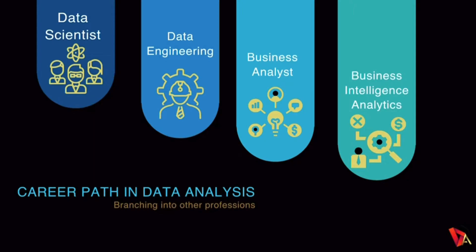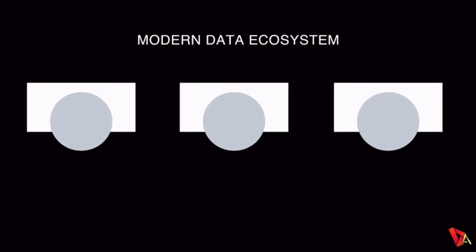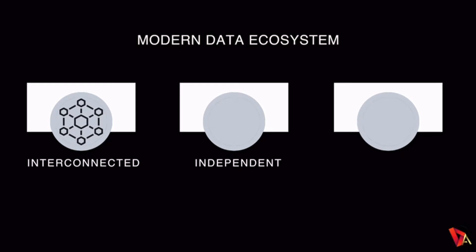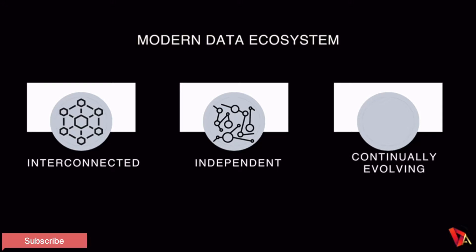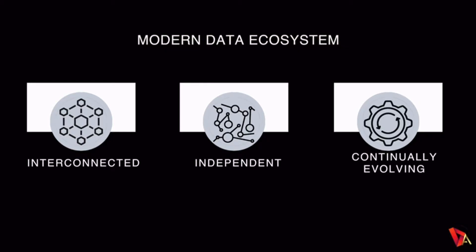Now let's move to the modern data ecosystem, which is a big topic in data analysis. In this we'll study about three different categories. Data is interconnected — it is interconnected nowadays. Data is independent — we don't need different software to access the data if it can be accessible from one software. And it is continuously evolving — the data is in regular form and can be evolved at each and every step.